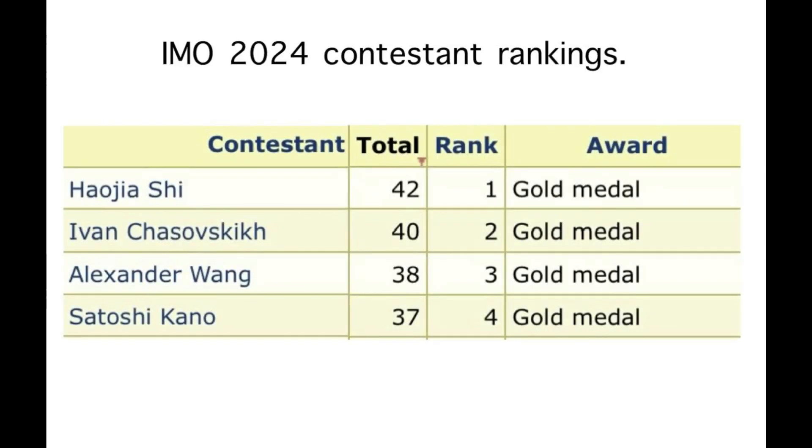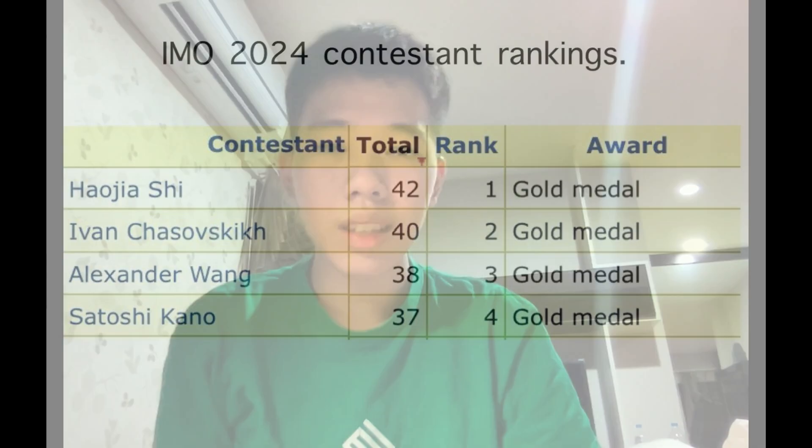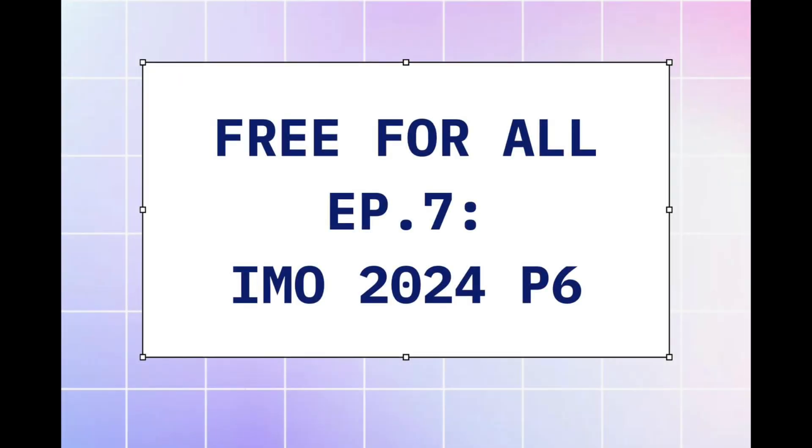However, I have a friend who participated in IMO 2024. His name is Satoshi, and he was representing Japan in the contest. He scored the 4th highest score in the world at 37 out of 42 total, and he did score a perfect 7 on problem 6. So in this episode, he will be our guest lecturer as we learn from his thought process, the technical details in the solution, as well as the rough ideas and the structure that holds everything together. This is Free For All episode 7 on IMO 2024 problem 6.